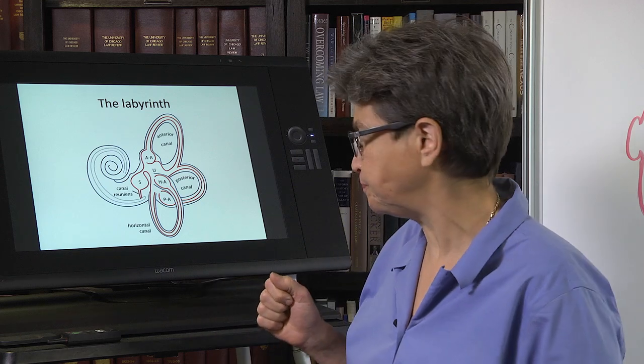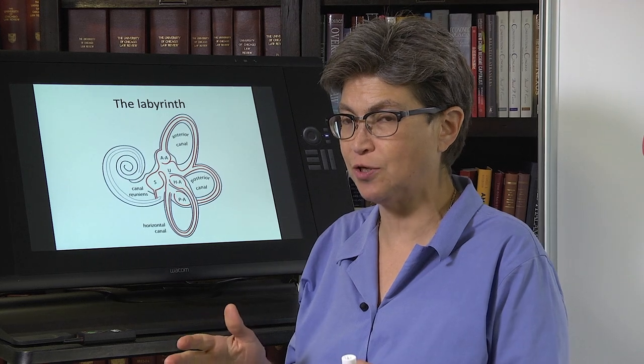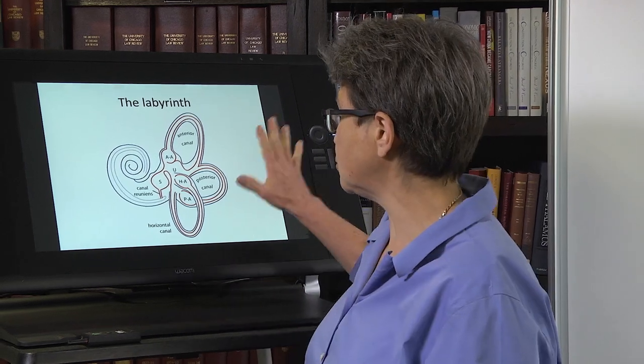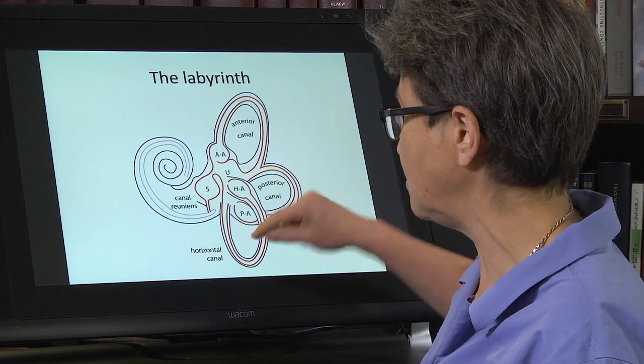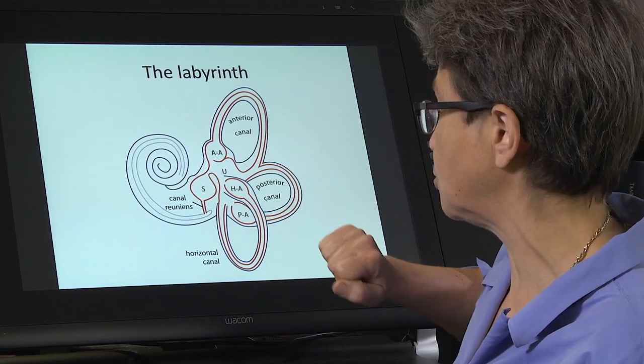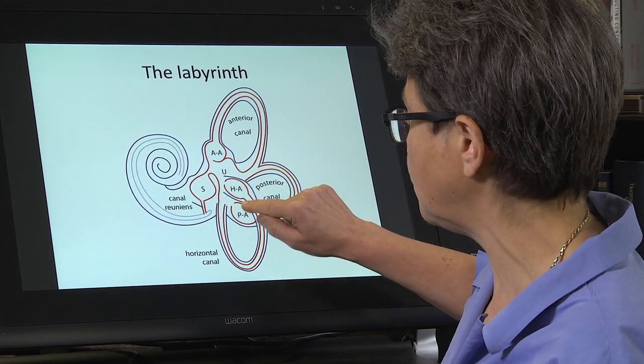So we're going to talk about angular acceleration. In the vestibular system, it's all about turning acceleration into some kind of stimulus that you deliver to the hair cells. Angular acceleration is going to activate hair cells that are in the canals. Linear acceleration is going to activate hair cells in the sacculus and the utriculus. So we're talking about the canals because we're talking about angular acceleration.